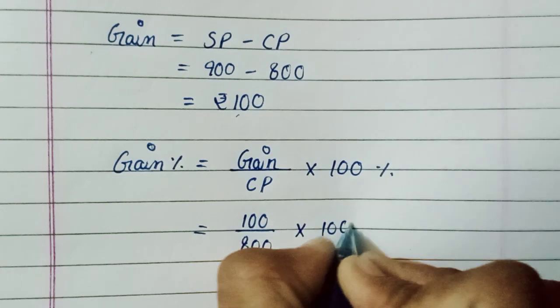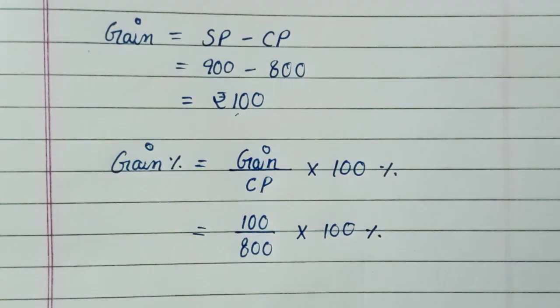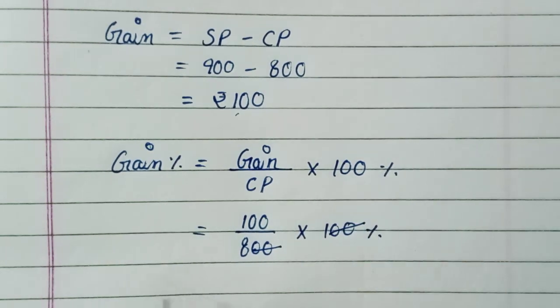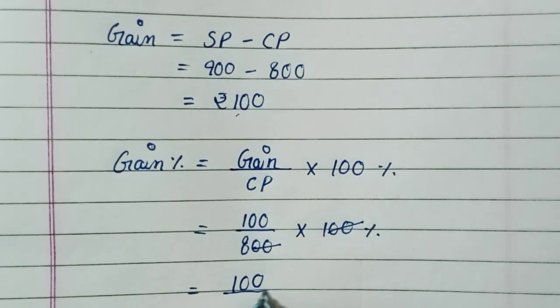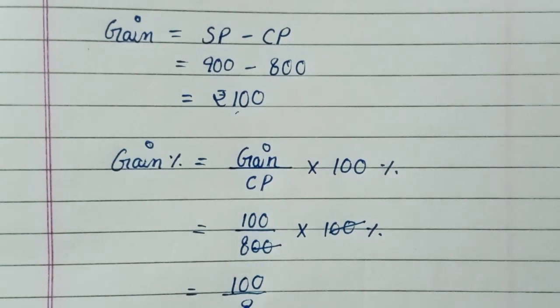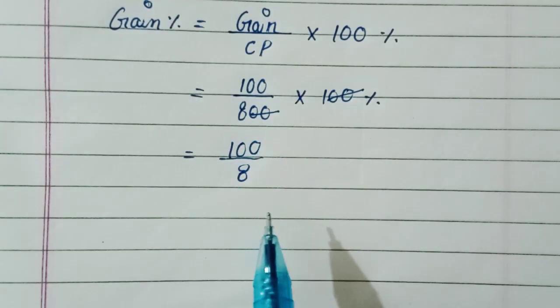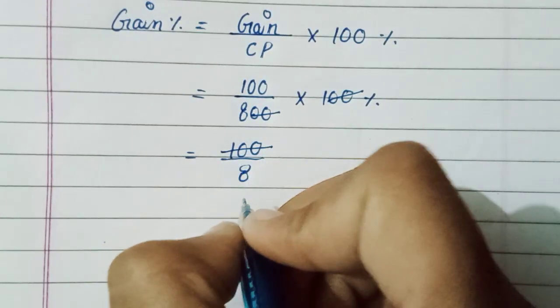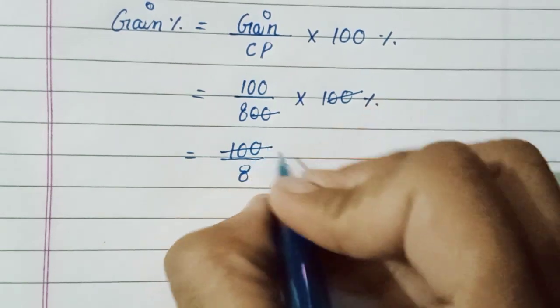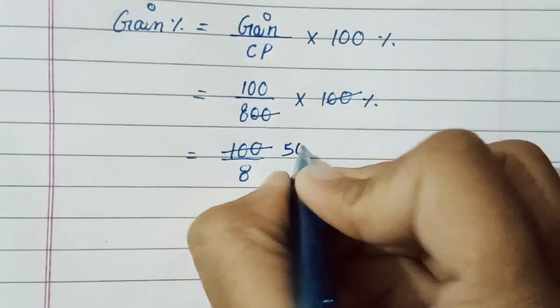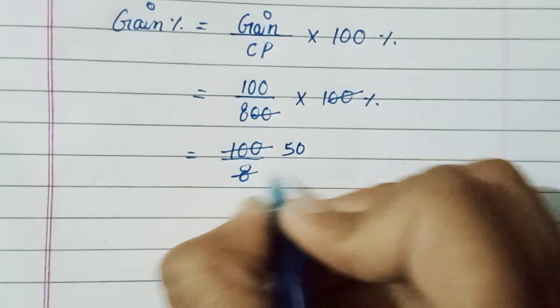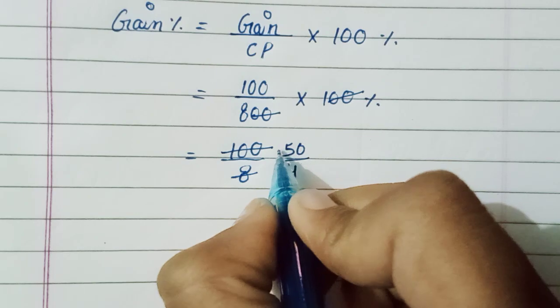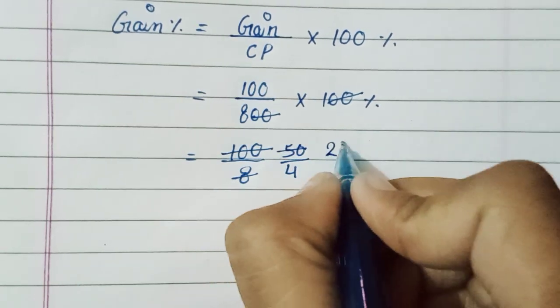Now we can cancel these zeros, and we have 100 upon 8. Now convert it into simplest form. We can cancel, so two fives is 10, and this 2 for the 8. Now again we can cancel by 2: 25 upon 2 percent.